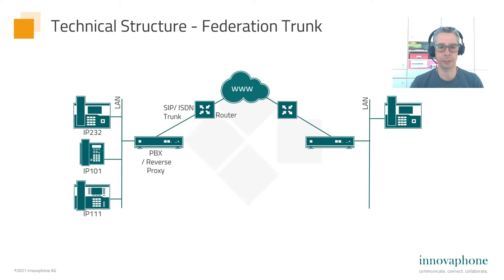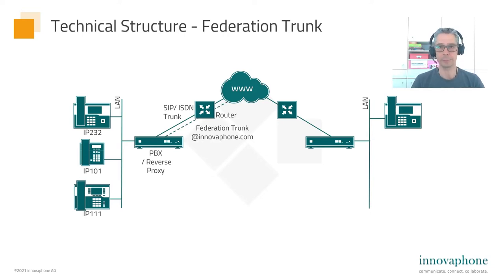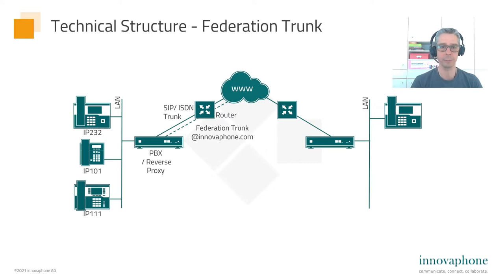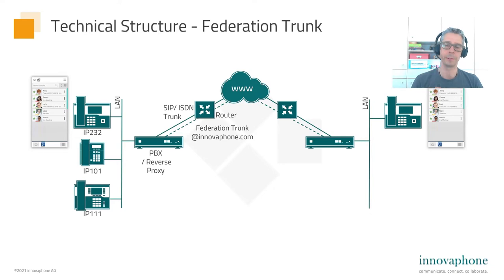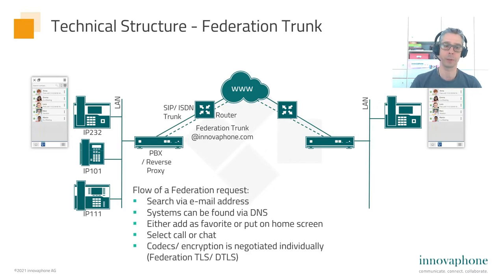This is a technical picture I want to use to explain it. On the left side you have one organization like innovafone, and on the other side you have another organization — here we also have innovafone systems. Normally we have a SIP trunk for voice calls, and now we create a federation trunk for H3.3 or SIP. The other organization has the same solution, and then it's possible to use your UC client to search for the email address of your partner. When you find it, you can build teams like favorite teams, or do a live telephone call, chat, whatever you want.